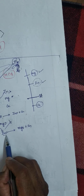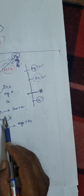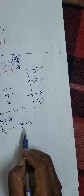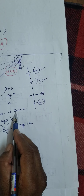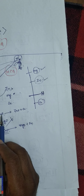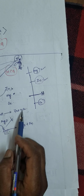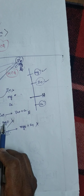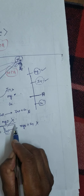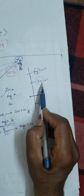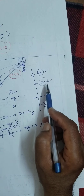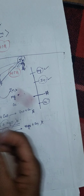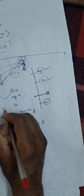Zinc plus magnesium oxide is not at all possible because magnesium is more reactive than zinc. Zinc cannot displace magnesium. These are all very tricky questions, even for those going for entrance exams.